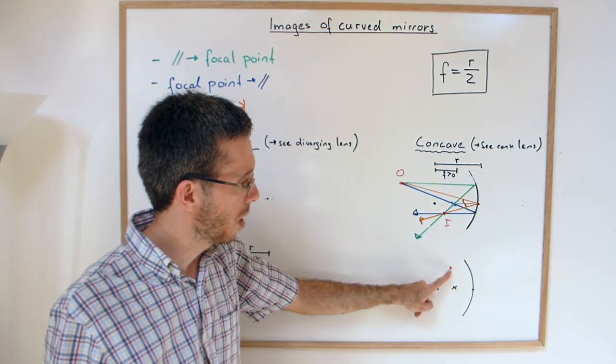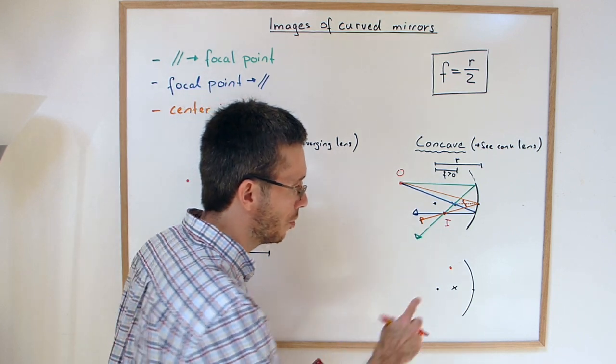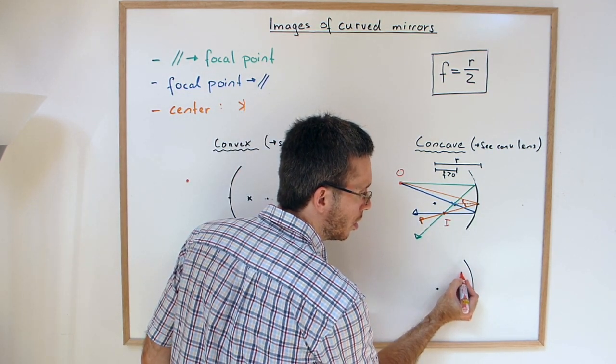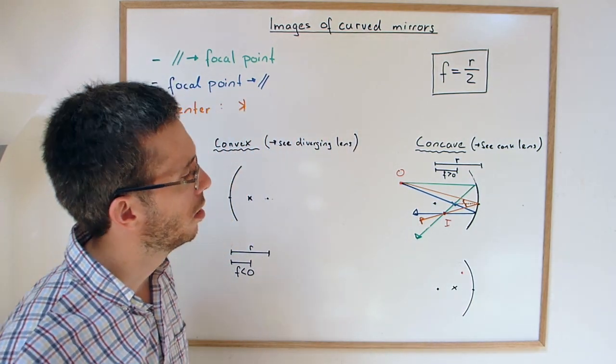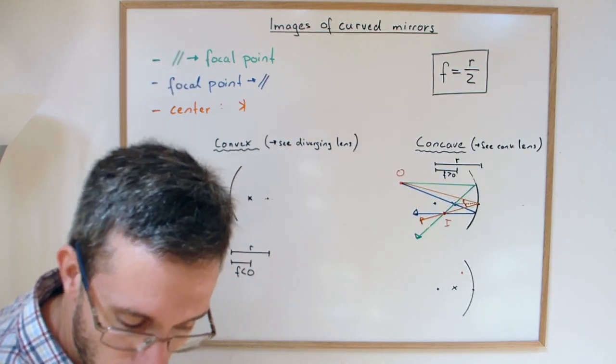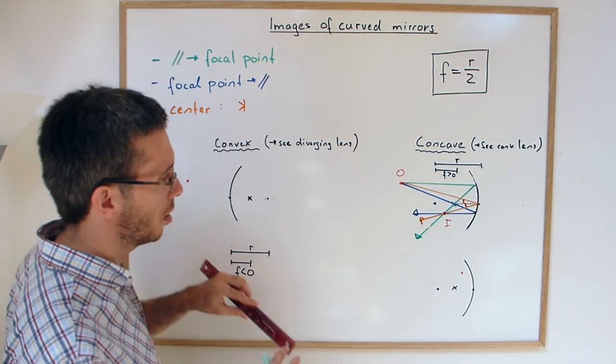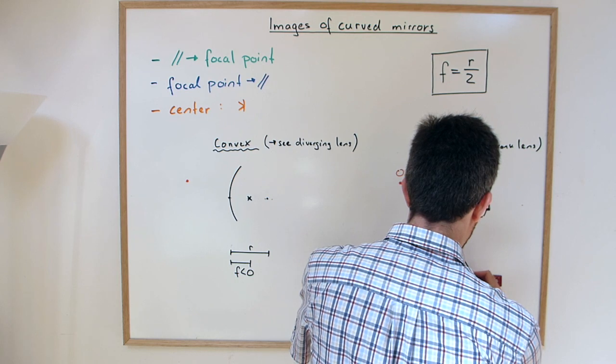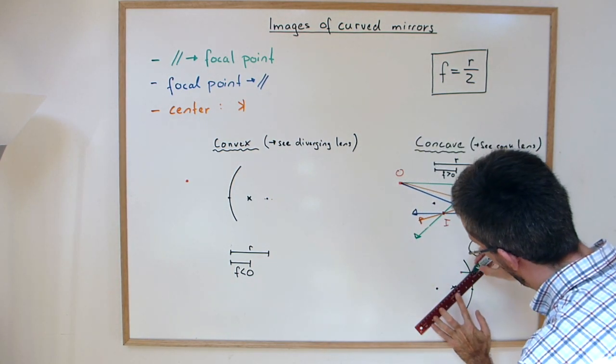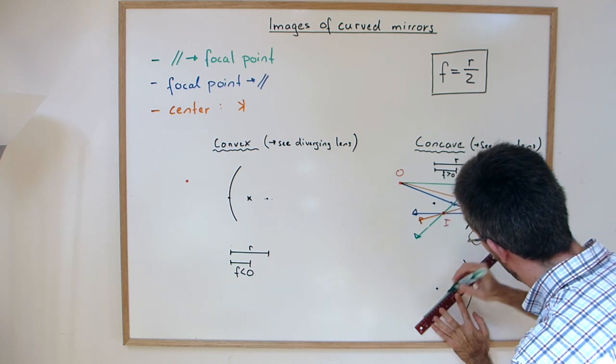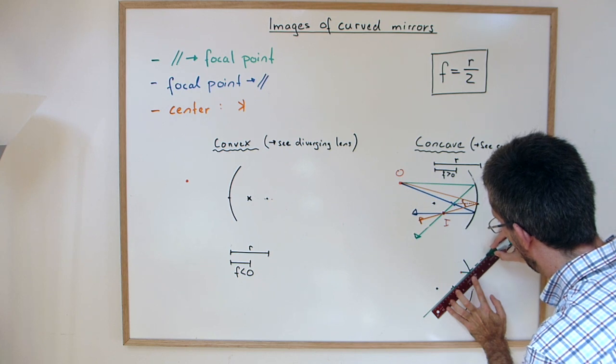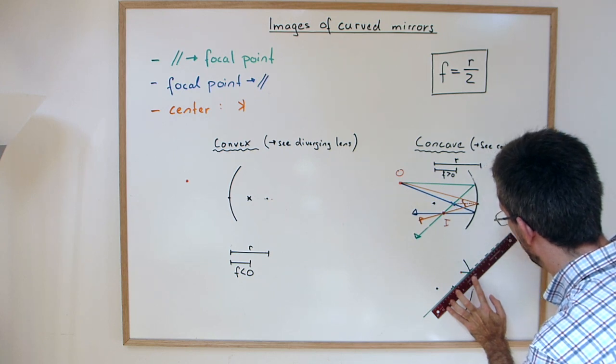And we could suspect that if the object is to the right of the focal point, we should get a virtual image. So let's see if that actually works out. First I'm going to take my parallel ray that goes through the focal point. I'm assuming that there will be a virtual image. I think they will meet in the back, so I'm already drawing this line here.